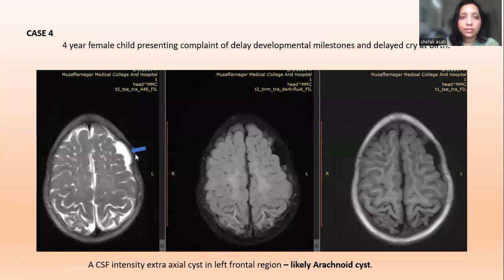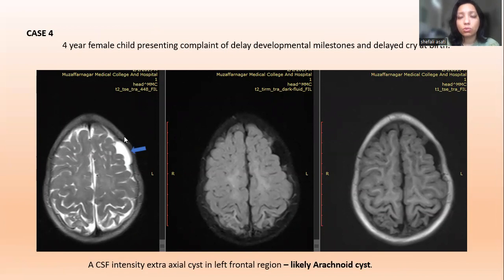Case 4: A four-year-old female child presented with delayed milestones and delayed cry. On imaging, there is a CSF-intensity extra-axial cyst in the left frontal region, likely an arachnoid cyst.